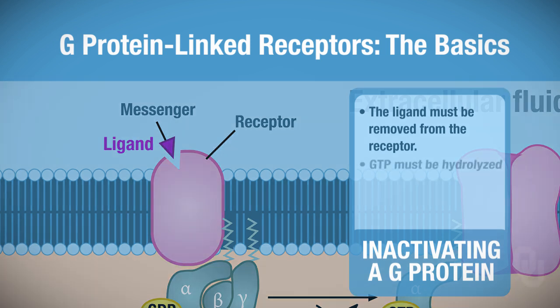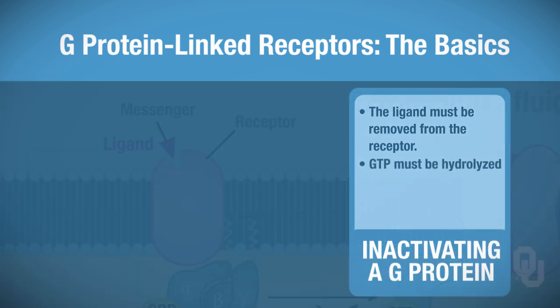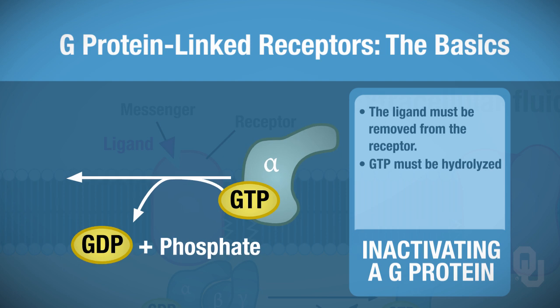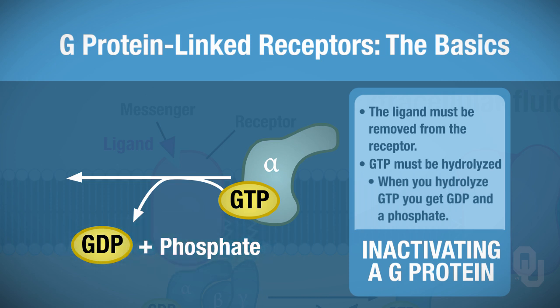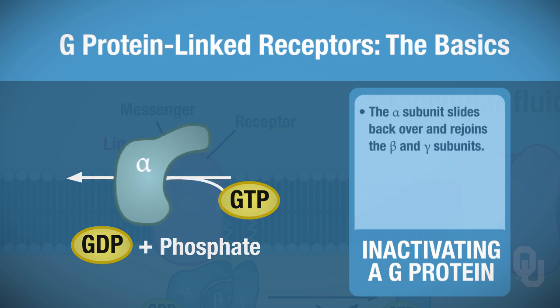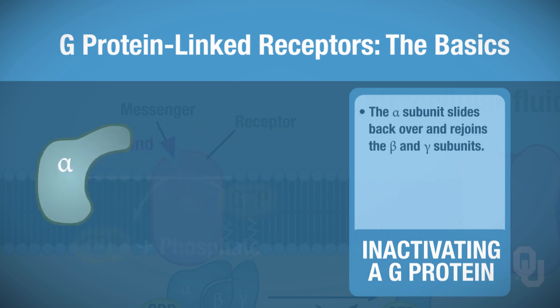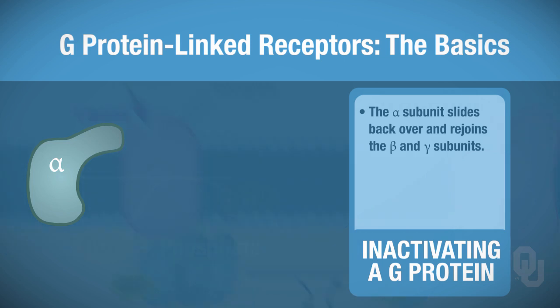The second thing that must happen to inactivate the G-protein is that GTP must be hydrolyzed. Remember when we hydrolyzed ATP, you got ADP and a phosphate? The same is true here—when you hydrolyze GTP, you get GDP plus a phosphate. When that happens, the alpha subunit slides back over and all three subunits are bound together once again.